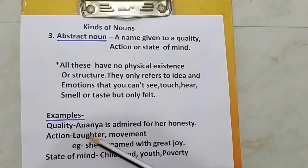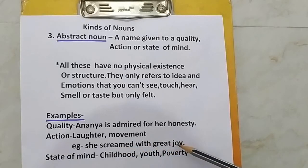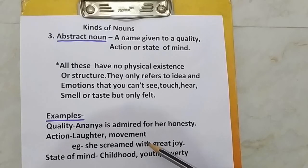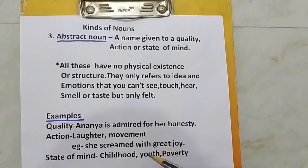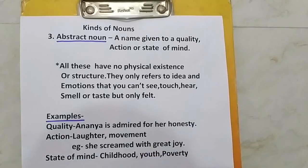Action: laughter, movement — these are actions. Example: she screamed with great joy. For example, when there is a competition between two classes or houses and your house wins the match, you screamed with great joy — that is the action. State of mind: childhood, youth, womanhood, poverty — these are states of mind.